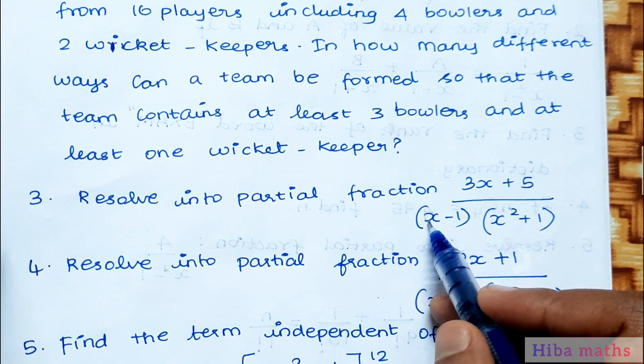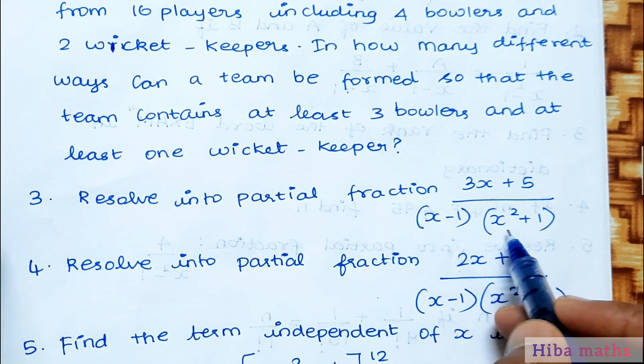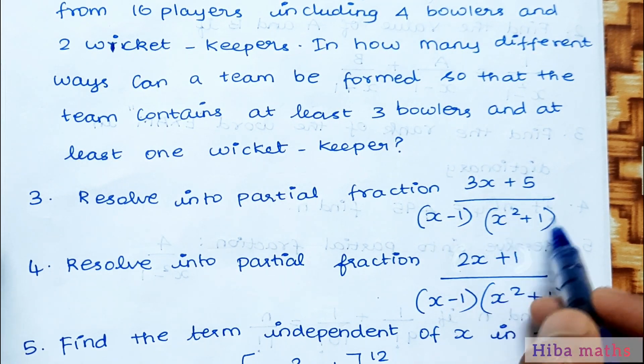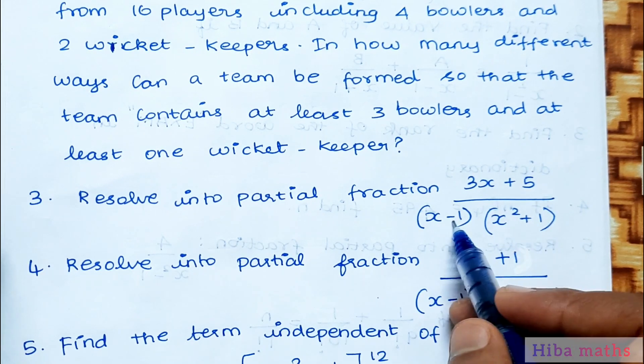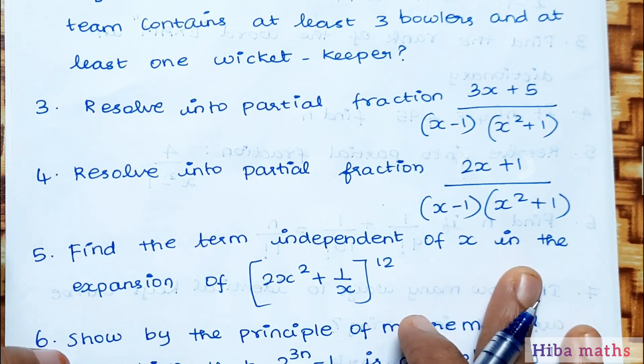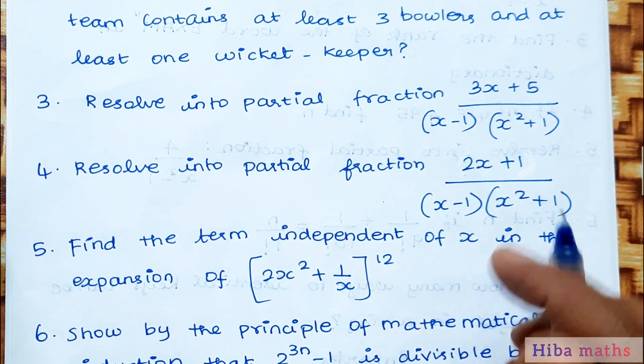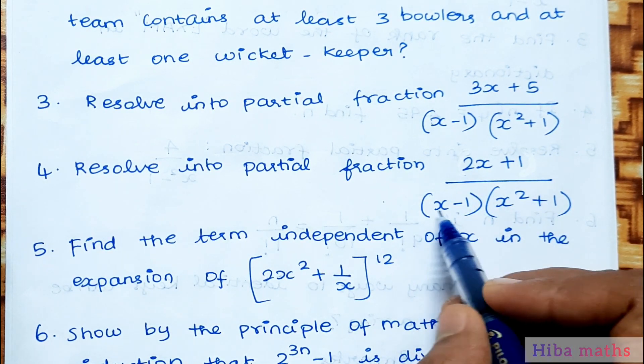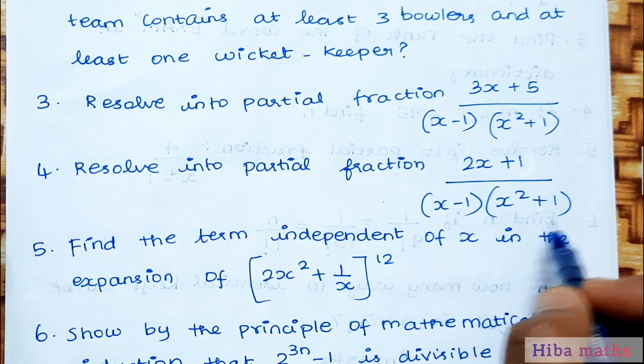Third type of partial fraction: (3x+5)/[(x-1)(x²+1)]. Here we must use the format ax+b for the second term in the denominator. Fourth question: resolve into partial fraction (2x+1)/[(x-1)(x²+1)].